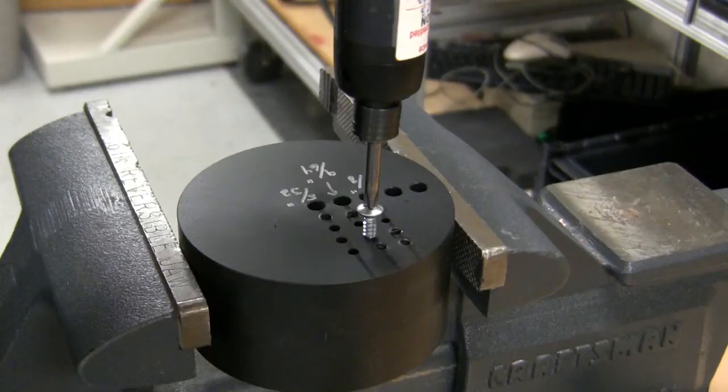In this example, screws are being driven into a plastic test block. There are three different hole sizes, which create three different levels of prevailing torque.